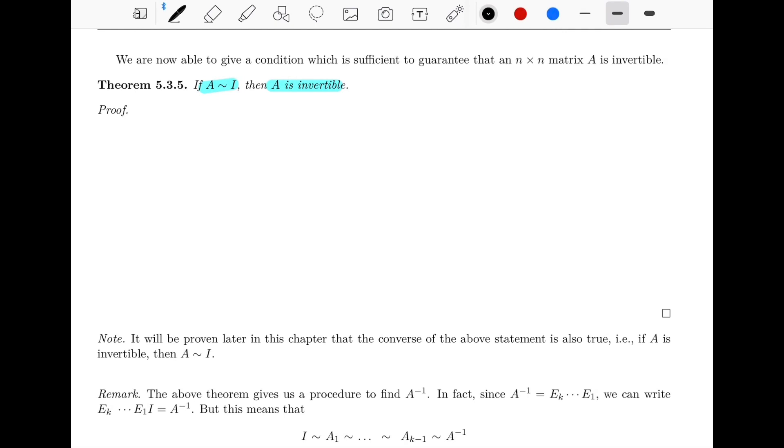Because if A is rho equivalent to I, then we know that there exists a sequence of elementary rho operations, a sequence of EROs, such that that sequence will turn A into I, right? That's what rho equivalence means. It means there's a sequence of, let's say, O1 all the way to OK, that will turn A into I.